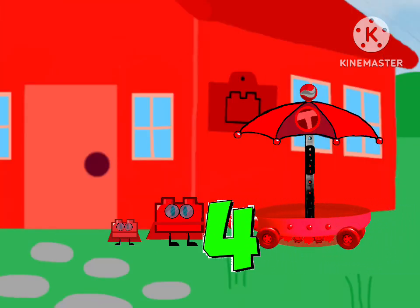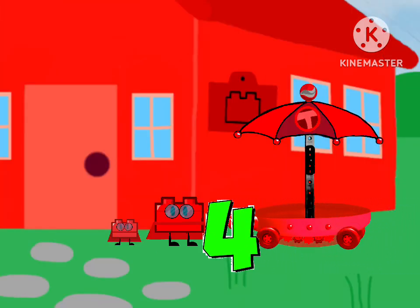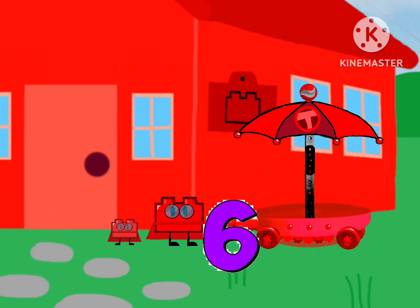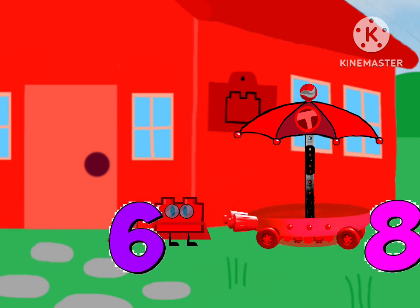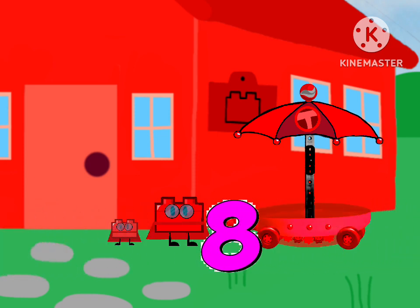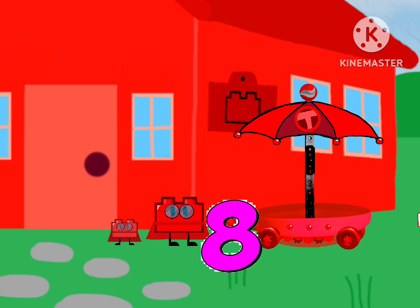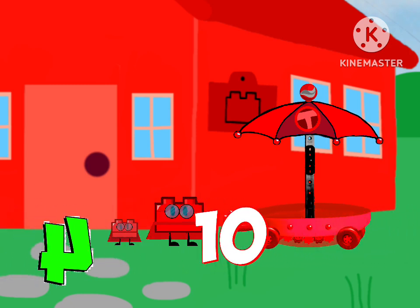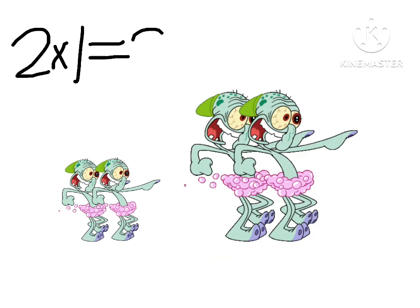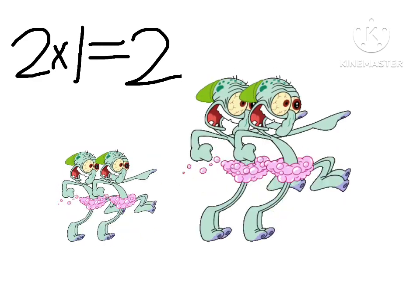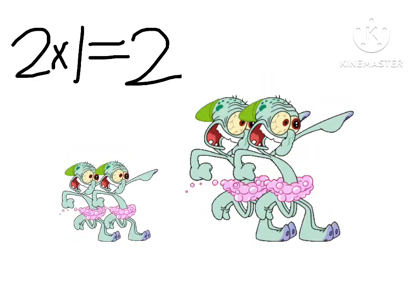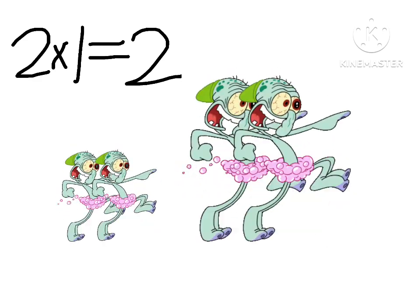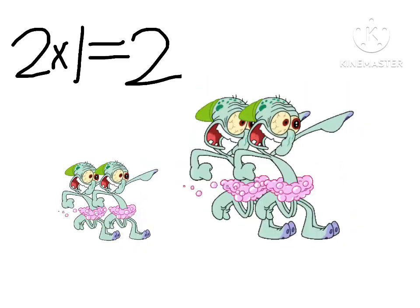Two times two is four. Elementary, my dear, two times three is six. Elementary, my dear, two times four is eight. Elementary, my dear, two times five is ten. Two times one is two, of course, and it must occur to you — you get an even number every time you multiply by two.